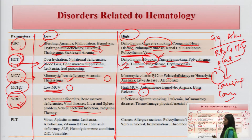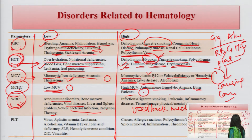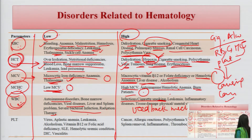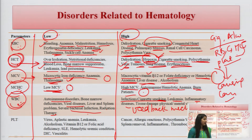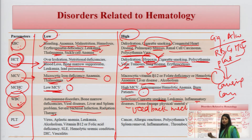As a feedback mechanism during infections, WBC levels will be high. Similarly, cigarette smoking and alcohol use raise WBC levels. In leukemia and inflammatory disease, WBC levels also rise as a feedback mechanism in later stages. For platelets, low platelet count is seen in: viral infections, aplastic anemia, leukemia, alcoholism, vitamin B12 or folic acid deficiency, systemic lupus erythematosus, hemolytic uremic conditions, and DIC — where platelets are coagulated in vessels.